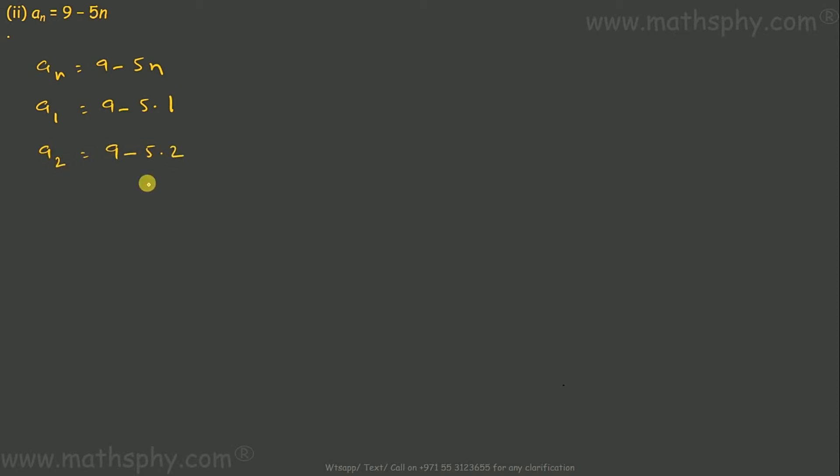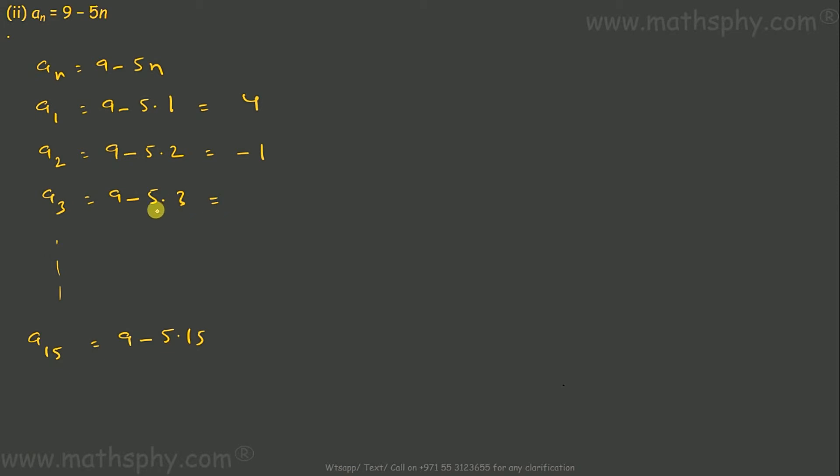Now let's take the second case. Here an equals 9 minus 5n. So a1 is 9 minus 5 into 1, which gives 4. a2 is 9 minus 5 into 2, which is 9 minus 10, giving negative 1. a3 is 9 minus 15, giving negative 6. It keeps going, and a15 is 9 minus 75, which is negative 66.